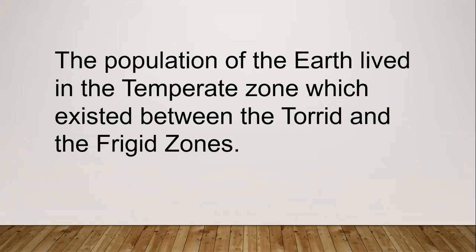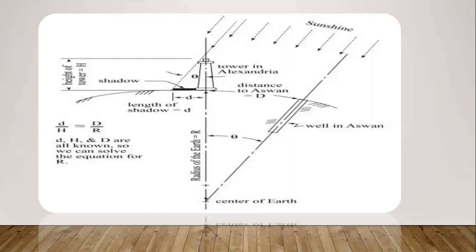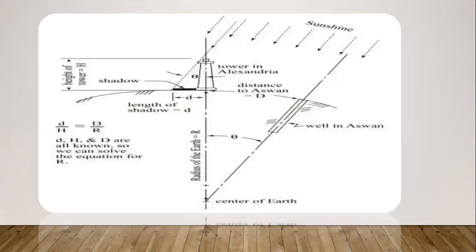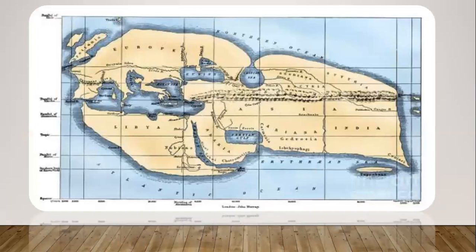The population of the earth lived in the temperate zone, which existed between the torrid and frigid zones. This is a map prepared by Eratosthenes — a world map of that time — and this shows how he measured the circumference of the earth. That is all about today's video covering three important scholars: Eratosthenes, Aristotle, and Plato.